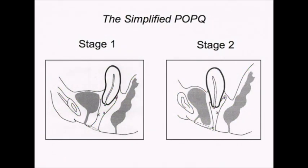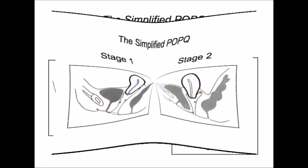These next two slides represent several examples of the simplified POP-Q stages. In the example on the left, all four points remain at least one centimeter above the hymeneal remnants — all four points are stage 1. In the box on the right, the anterior vaginal wall point descends to stage 2, that is one centimeter above or one centimeter below the hymeneal remnants, while the other three points are stage 1.